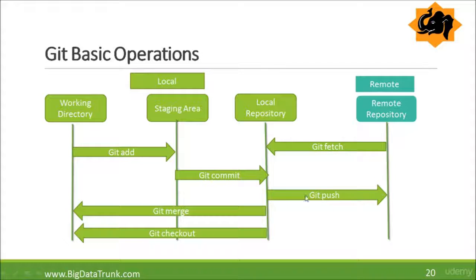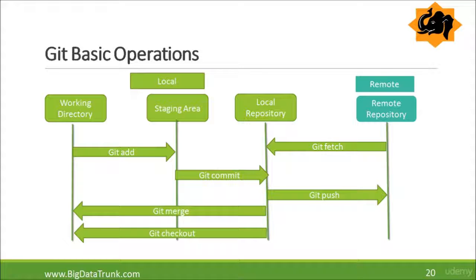Once your files are on the local repository, you can push them to the remote repository and merge them into other branches, or check out back to the working directory, and many more operations. The fetch command grabs changes from the remote repository and puts them into your local repository. You can use git merge to join two lines of history, and you can roll back to an old branch using git reset or the checkout command. This is the basic structure of git operations.